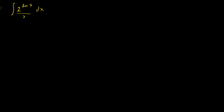So the first thing when you see an integral like this — the indefinite integral of 2 to the natural log of x over x dx — you say, I have this natural log of x up in the numerator, and where do I start? The first thing that should pop out at you is that this is the same thing as the integral of 1 over x times 2 to the natural log of x, dx.